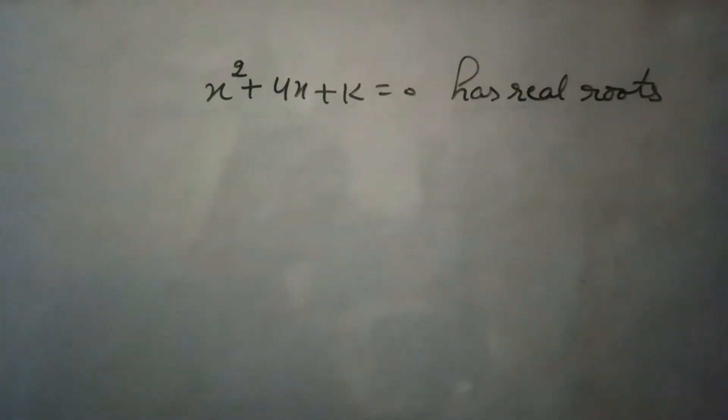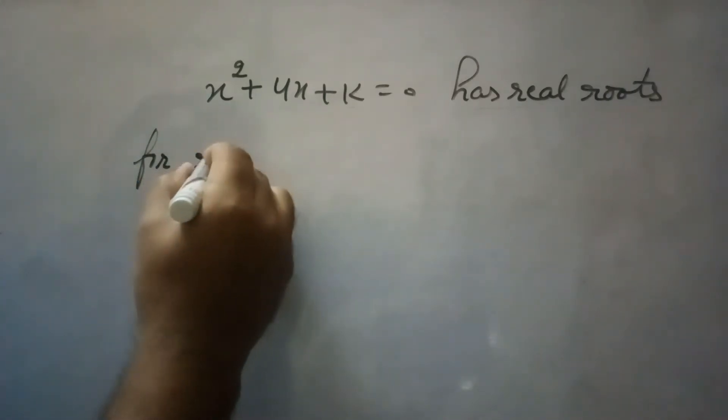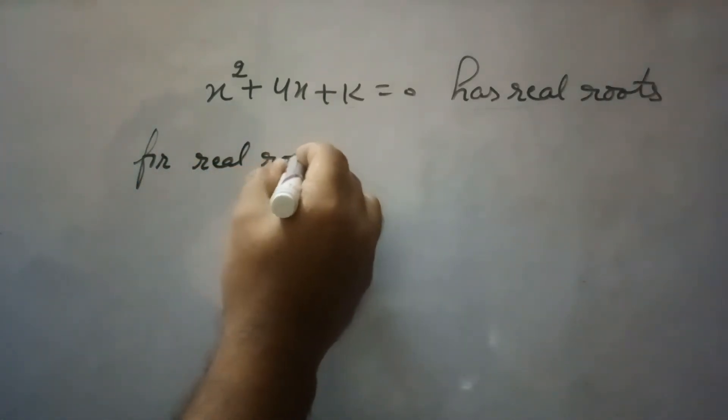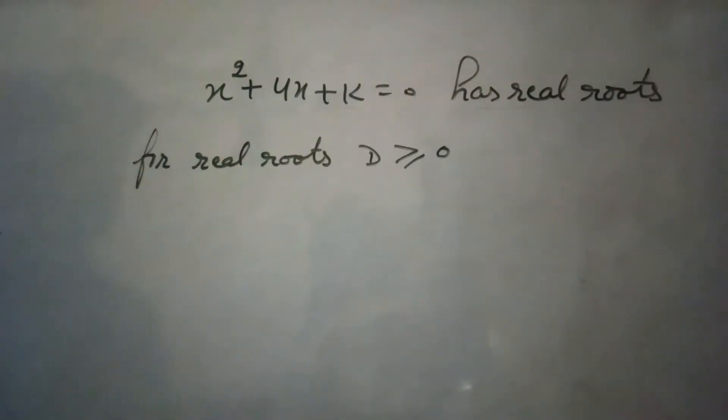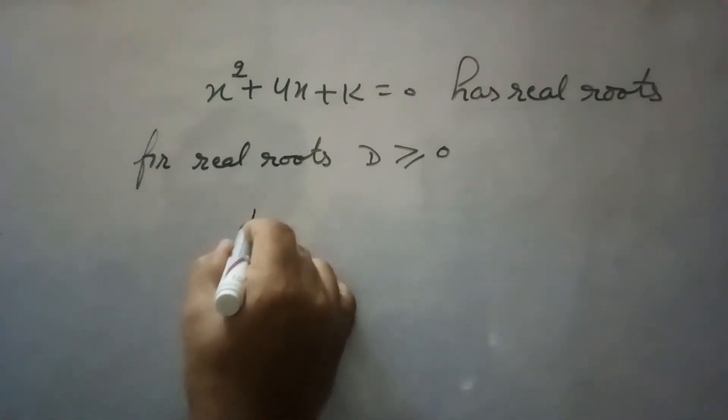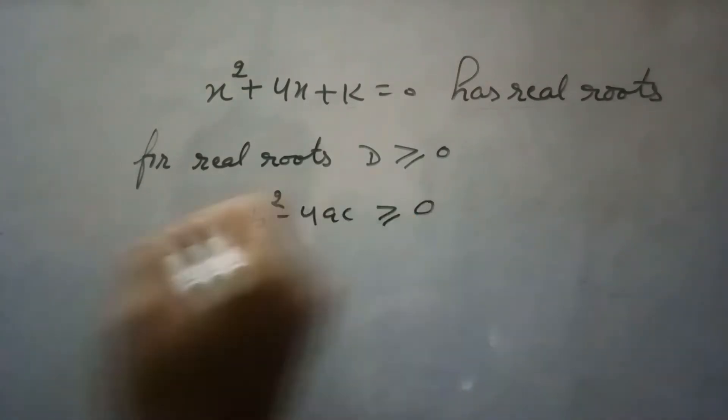Because it has real roots, the discriminant must be greater than or equal to 0. The discriminant is b² - 4ac ≥ 0.